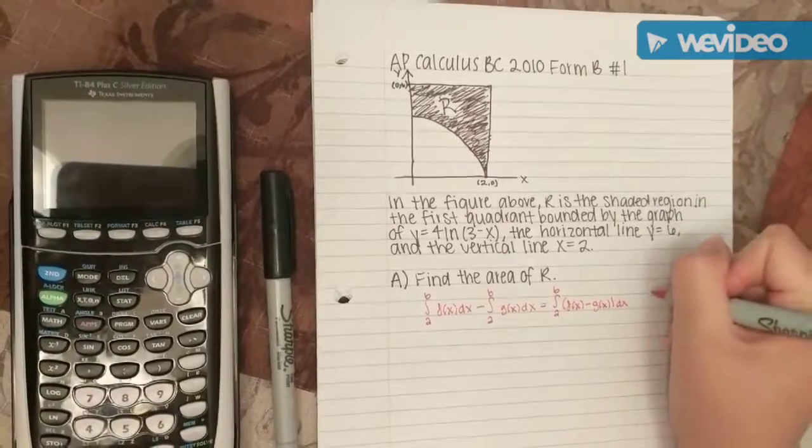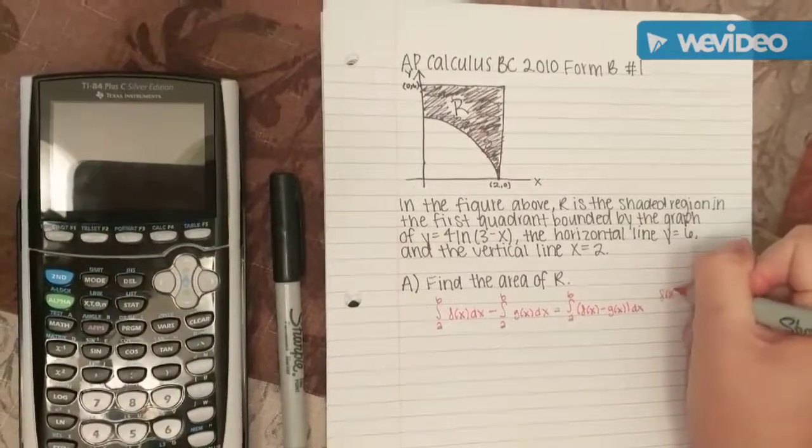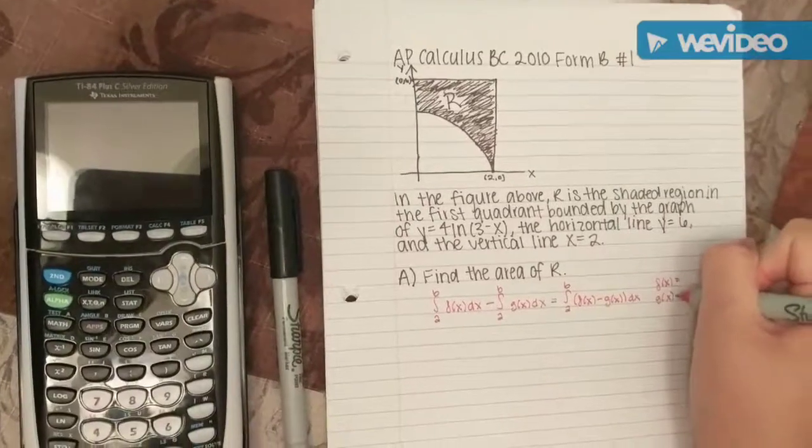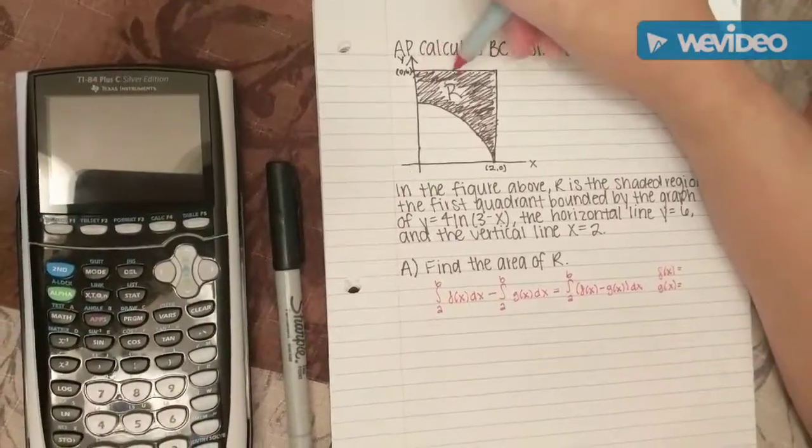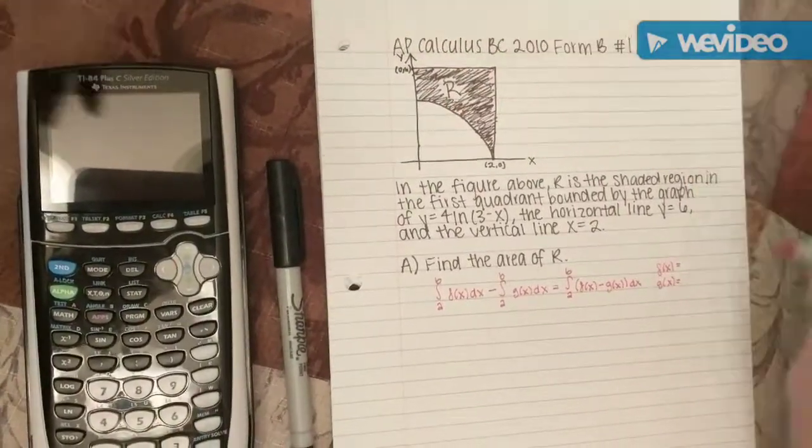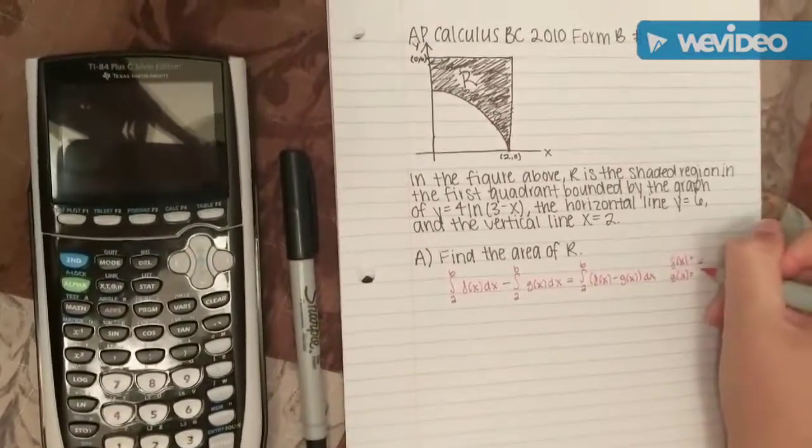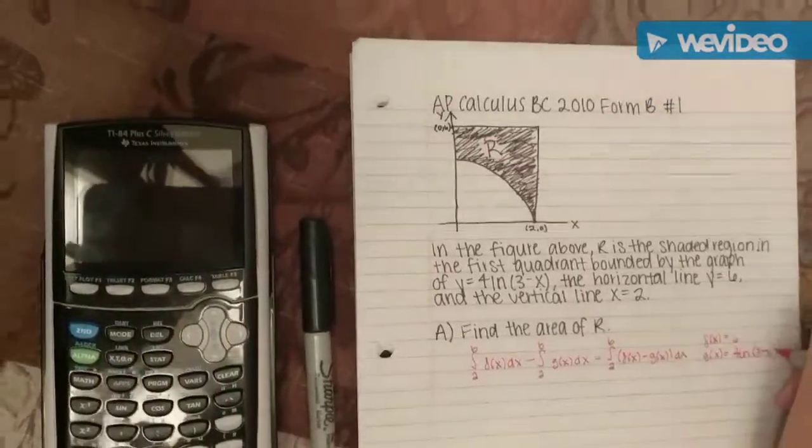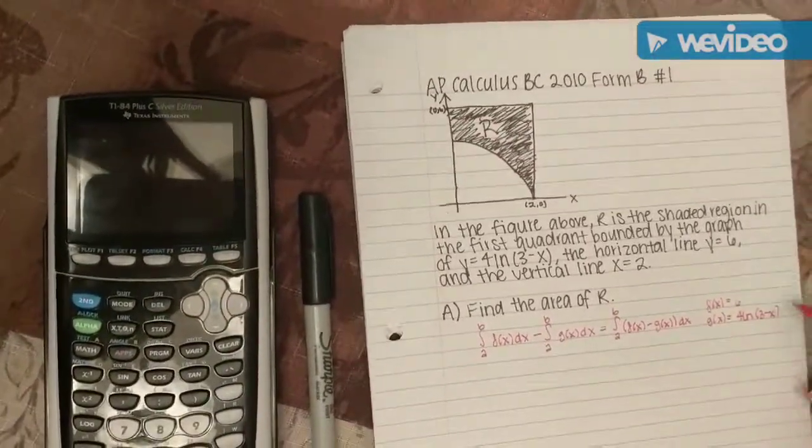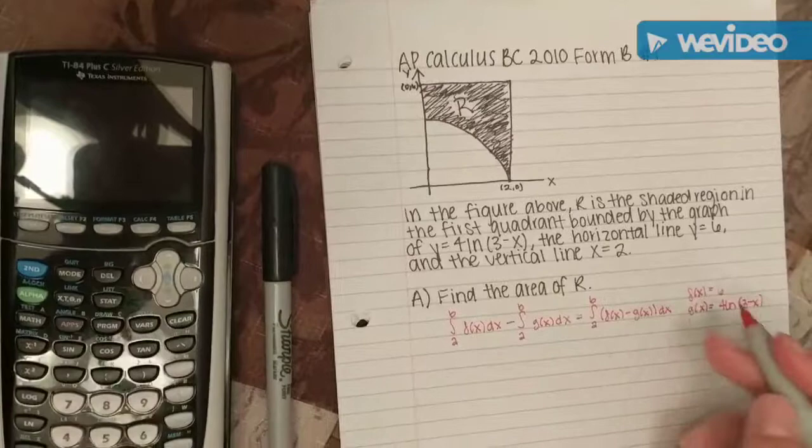In this case, we would use f(x) and g(x). f(x) is always the upper function. This is upper, this is lower. So in this case, the upper function would be 6, and the lower function would be 4 times the natural log of 3 minus x. Using these, you just plug it into this condensed formula.